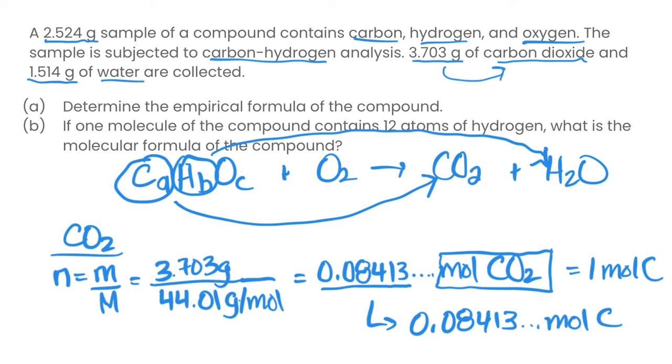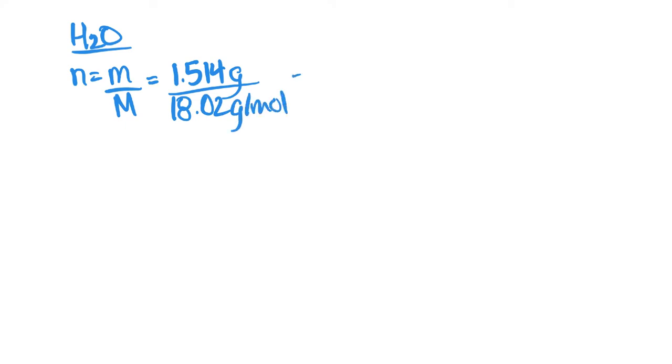Next up, let's take a look at the water. We got 1.514 grams of water that's collected. If we take our water, the number of moles is equal to 1.514 grams divided by the molar mass of water, which is 18.02 grams per mole. That is going to give us 0.08401, and that's moles of water.